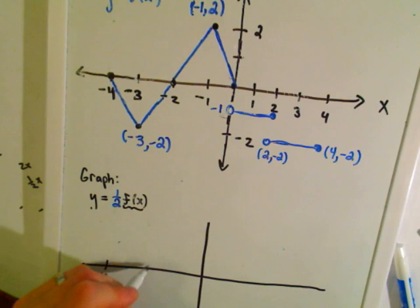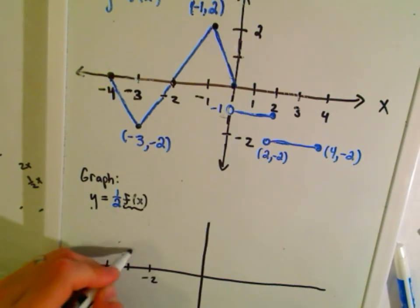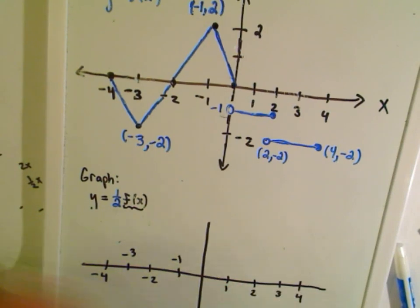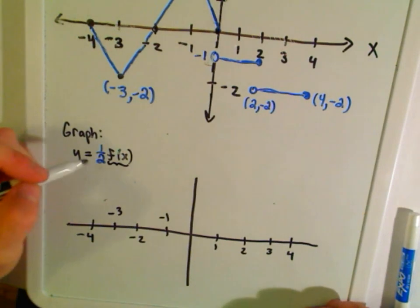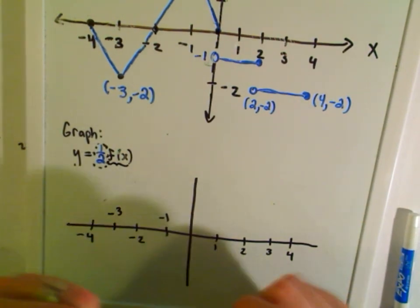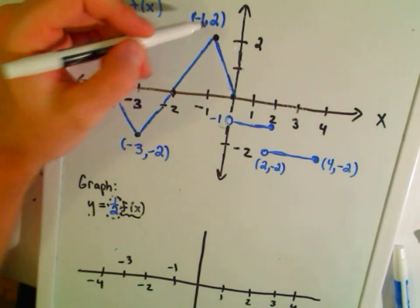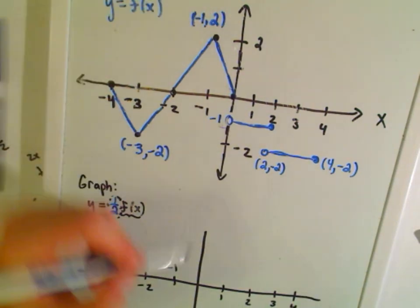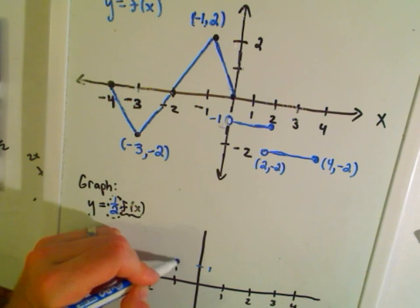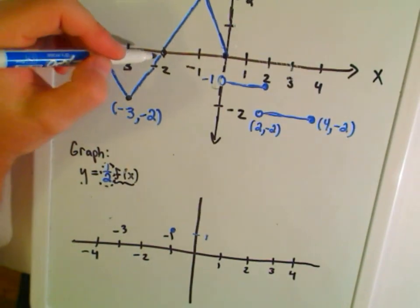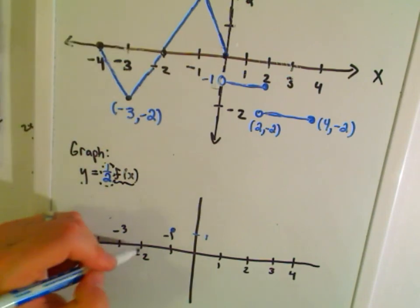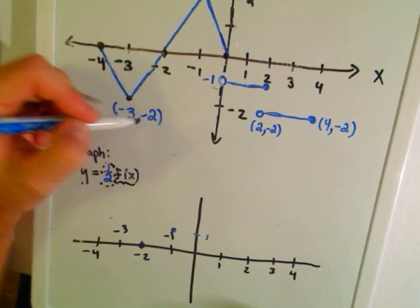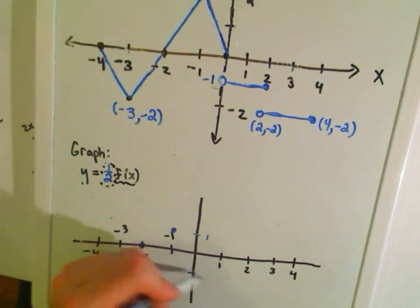It still extends out to negative four and positive four on the right-hand side. The difference is I'm now multiplying the y-coordinates by one-half. Instead of (-1, 2), I only go up to (-1, 1). The y-coordinate at x = -2 was zero, so I'm still there. At x = -3, the original y was -2; multiplying by one-half gives -1.